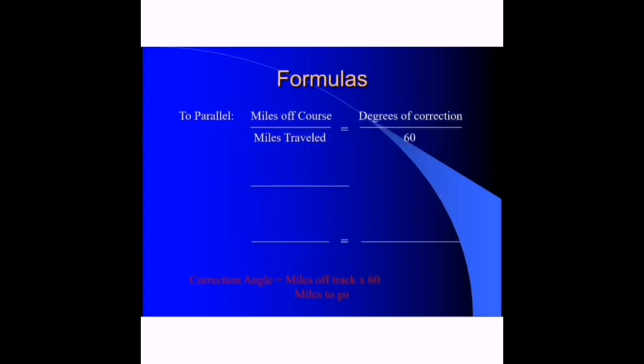The general formulas used in aviation to determine this on application of the 1 in 60 rule: to fly parallel to your desired track, miles off course over miles traveled equals degrees of correction over 60. This can be simplified as track error equals miles off track times 60 over miles flown.